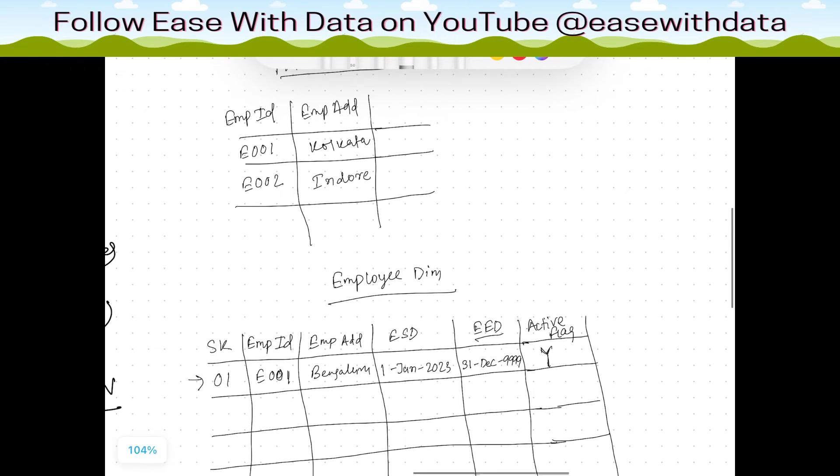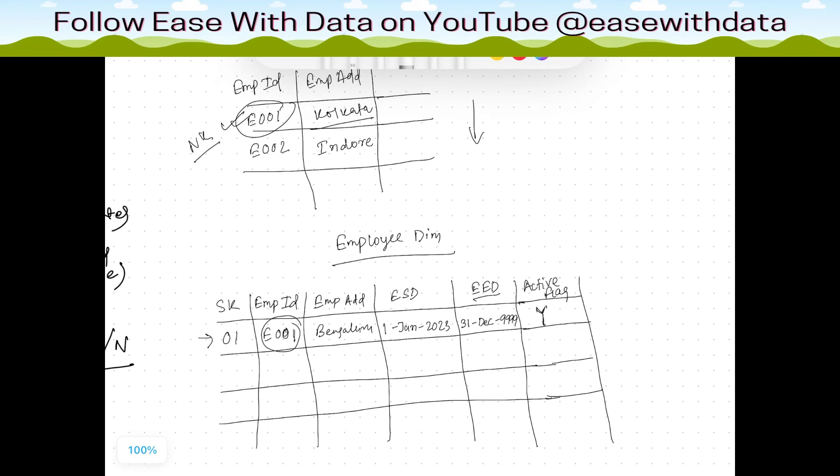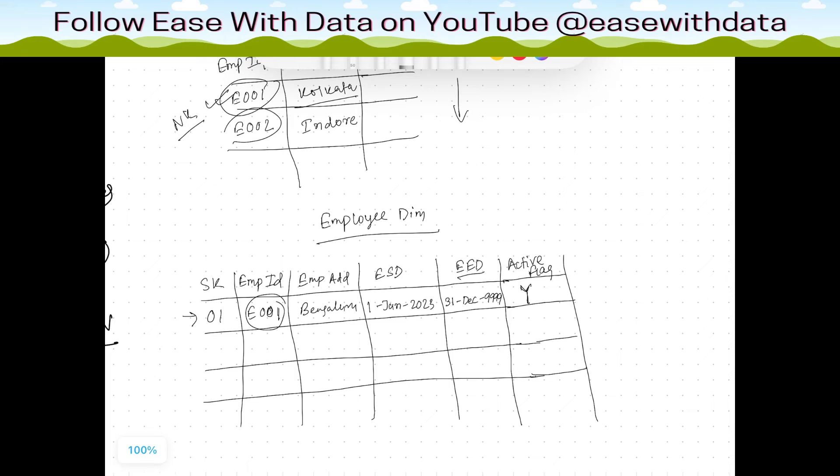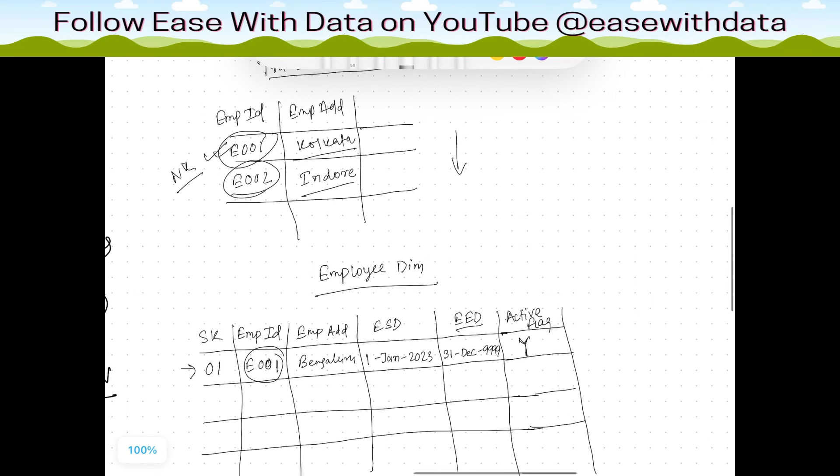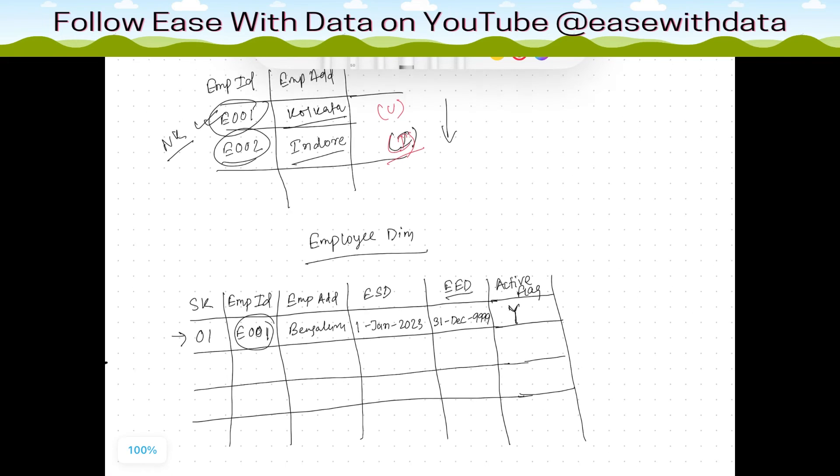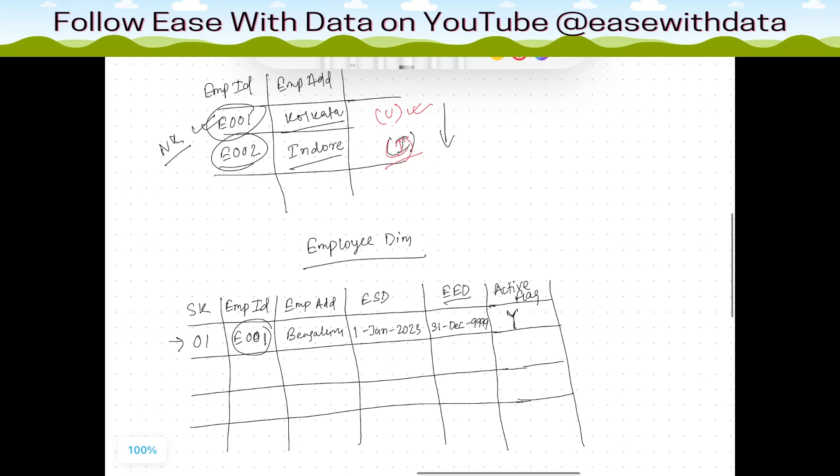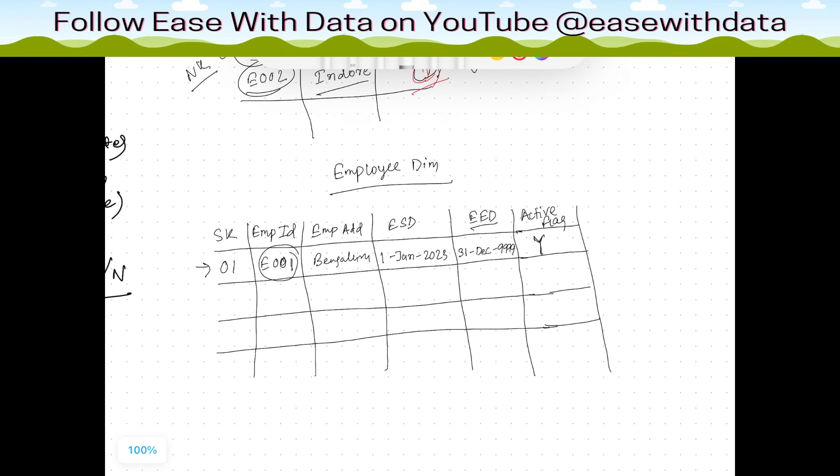Now consider there is a change. We are getting two changes as a part of the data load. The first change is the same employee which was there, E001, which is our natural key in this case. The employee address changes to Kolkata, and we get one more record which is not there as a part of our dimension, which is E002, where the employee is from Indore. So this is the insert case for us and this is an update case. Since we maintain historical record, we do not update. We basically insert a new record.